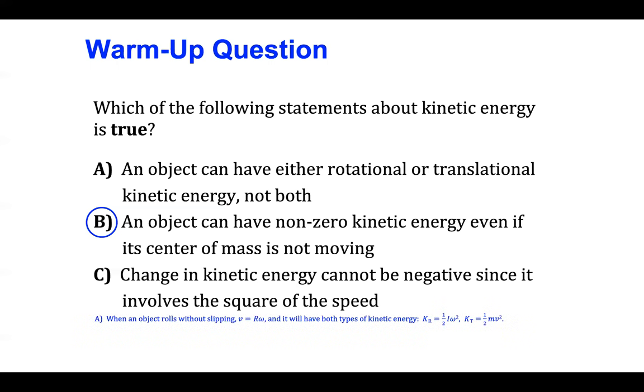Statement A is false because when an object rolls without slipping, its translational speed V is related to its angular speed omega through the rolling without slipping relationship, V equals R omega. And it will have both types of kinetic energy, that due to rotation, one-half I omega squared, and that due to translation, one-half Mv squared. So an object can have both rotational and translational kinetic energy as it rolls without slipping.